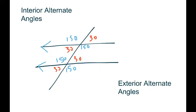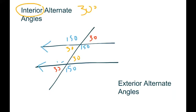Our opposites — the two 150s and the two 30s — are equal. Our corresponding angles are all the 150s on one hand and all the 30s on the other. The other angles that are equal are the alternate interior angles and alternate exterior angles. Interior means on the inside, like the interior of a house. In this case, the 30 on the inside at the top intersection and the 30 on the inside at the bottom are alternate interior angles. The two 150s on the inside are also a set of alternate interior angles.